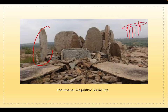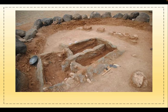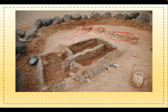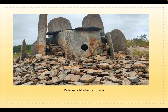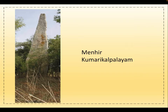The burial site at Kodumanal shows large stone slabs arranged in a dome shape with urns placed underneath. Various kinds of urns and objects have been excavated there. A dolmen from Mallachandram shows stones placed and covered with another slab of stone — this is called a dolmen. A menhir — an erected upright stone — was used as a hero stone for dead warriors, found at Kumarikalpalayam.